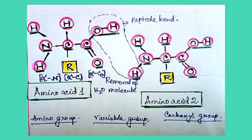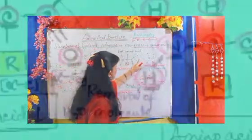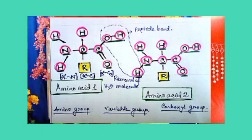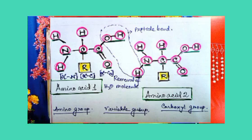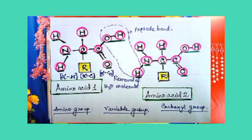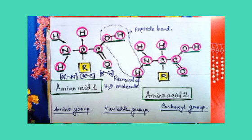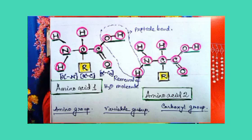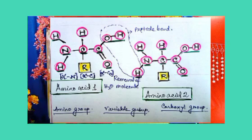The alpha amino nitrogen is linked with the alpha carboxylic group of the other amino acid. The alpha nitrogen is linked to the carboxylic group of the adjacent amino acid, forming a polypeptide bond, which is a kind of covalent bond. The basic structure of amino acid 1 and amino acid 2 remains the same — having an NH2 group, a COOH group, an alpha carbon, and a variable group.